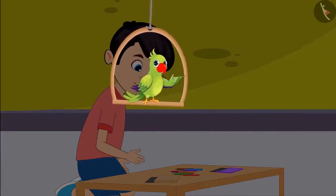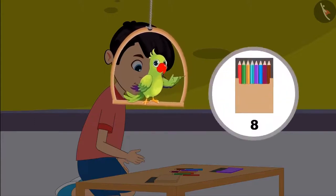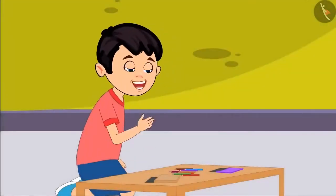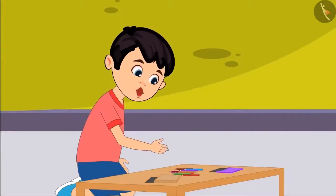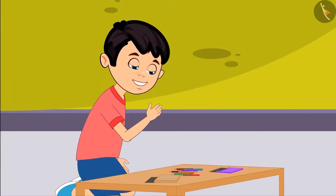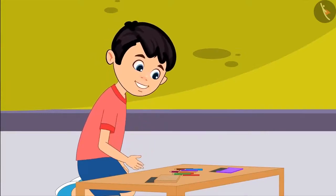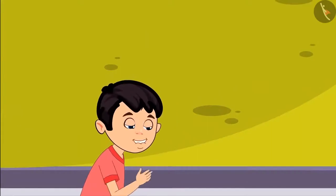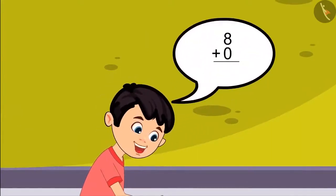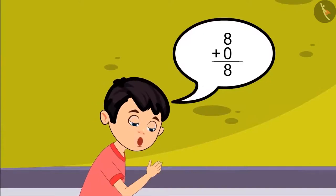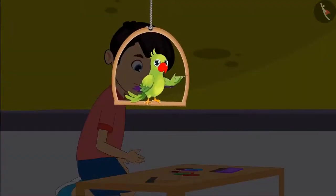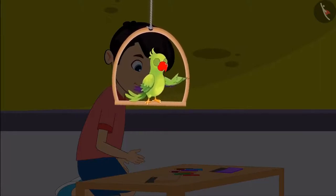Yes, you are correct — Chotu has eight colors. When we add objects to some more objects, the total number increases. But since one box has eight colors and the other has zero, the total is still eight. So when Chotu added the colors of the two boxes, one box was empty (zero colors) and the other had eight colors — so he has eight colors in total.